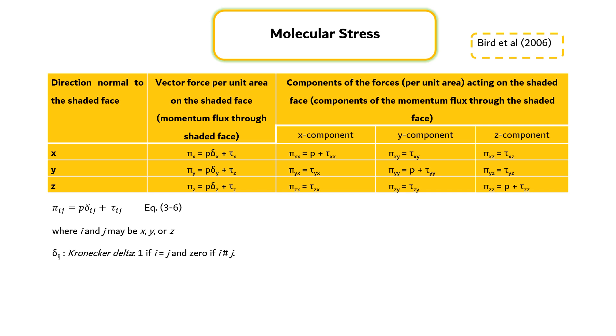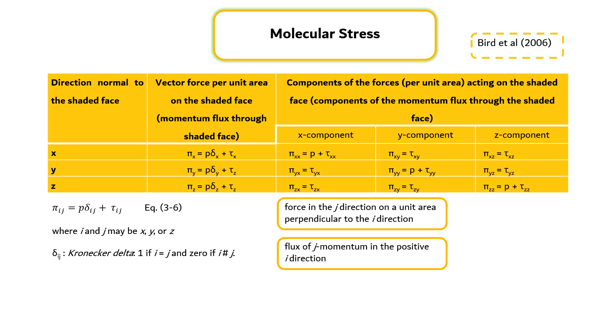Pi_ij may be interpreted in two ways. First, force in the j-direction on unit area perpendicular to the i-direction, and second, flux of j-momentum in the positive i-direction, that is, from the region of lesser x_i to that of greater x_i.